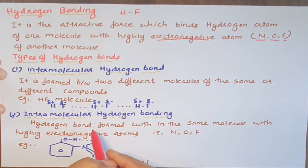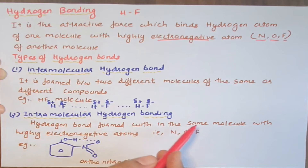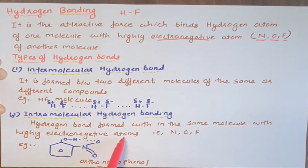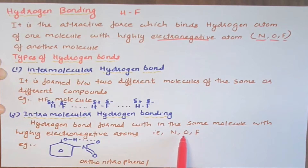Intramolecular hydrogen bonding is the hydrogen bond formed within the same molecule, with highly electronegative atoms, i.e., Nitrogen, Oxygen, and Fluorine.